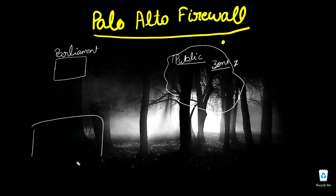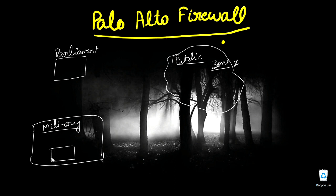There can also be a military area where officials live or conduct operations — you are not authorized to visit there. Certain people, like family members of military personnel, can visit certain zones of the campus, but only limited areas. They cannot go to official areas where more secure things are. Similarly, in Parliament, there are some areas you can visit and some you cannot.